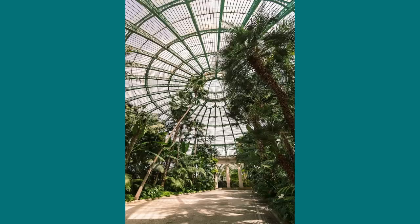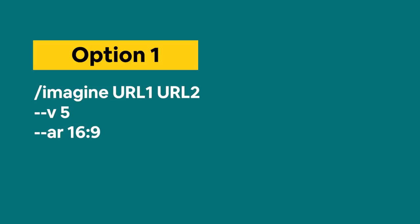Let's take a look at the images I picked for this first example. My first image is of a slick hotel lobby from Unsplash, and I'd like to blend it with another Unsplash image — a photo of the royal greenhouses in Brussels, Belgium. Traditionally, there are two ways to do this: Option 1 is to copy the URLs and use them as image prompts in a classic Imagine command, and Option 2 is to use the Blend command in Midjourney.